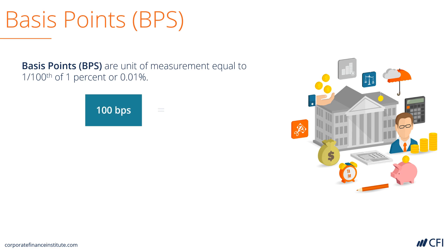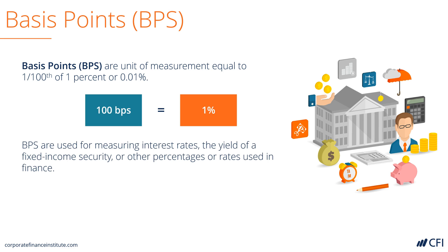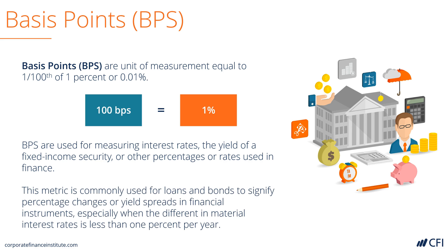Basis points, or BEEPs for short, are a unit of measurement equal to 0.01%. Or put another way, 100 basis points is equal to 1%. BEEPs are commonly used when measuring interest rates and yields with fixed income securities in finance.